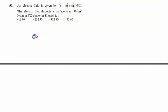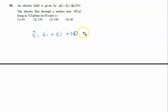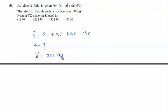An electric field is given by 6i + 5j + 3k newton per coulomb. We have to calculate the electric flux through a surface area. The surface area is given as 30i cap meter square — both are in SI units, so no conversion needed.